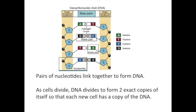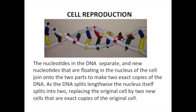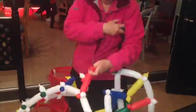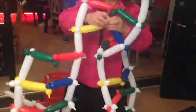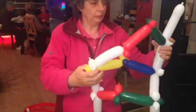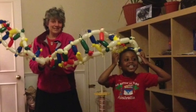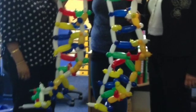Pairs of nucleotides link together to form DNA. As cells divide, DNA divides to form two exact copies of itself, so that each new cell has a copy of the DNA. The nucleotides in the DNA separate, and new nucleotides floating in the nucleus of the cell join onto the two parts to make two exact copies of the DNA. As the DNA splits lengthwise, the nucleus itself splits into two, replacing the original cell with two new cells that are exact copies of the original cell.